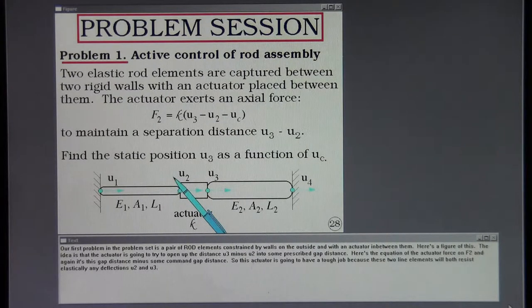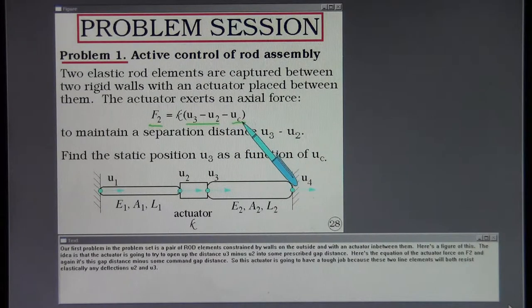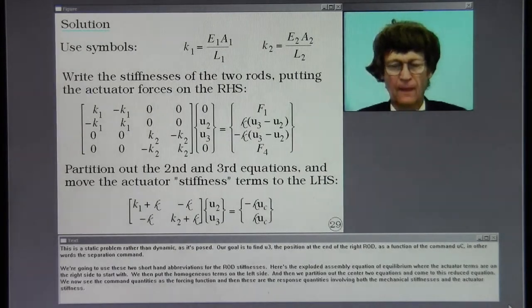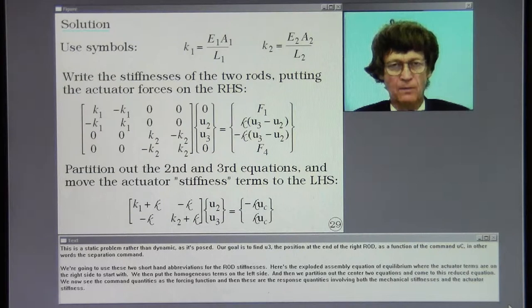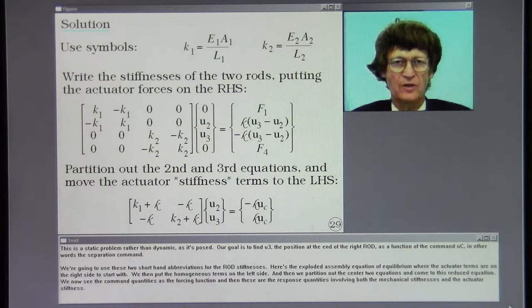Here's the equation of the actuator force on F2, and again it's this gap distance minus some command gap distance. So this actuator is going to have a tough job because these two line elements will both resist elastically any deflections U2 and U3. This is a static problem rather than dynamic as it's posed. Our goal is to find U3, the position at the end of the right rod, as a function of the command UC, in other words the separation command.